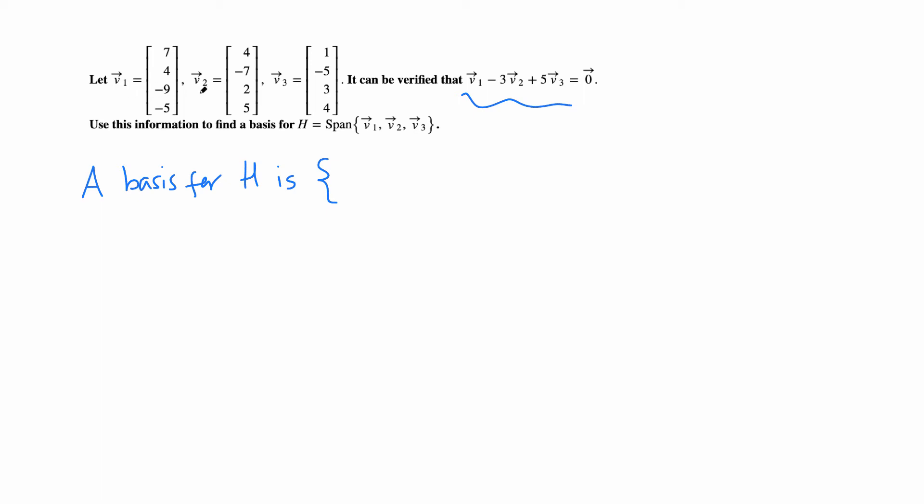When we have only two vectors, it's easy to check if they are linearly dependent or not. Looking at this, can we get v2 from v1 or v1 from v2 by multiplying by a constant? No, because if we multiply by any number we're not going to get the other.